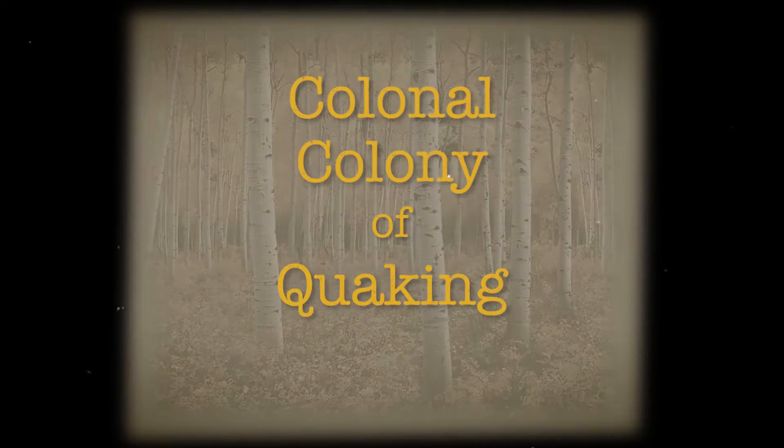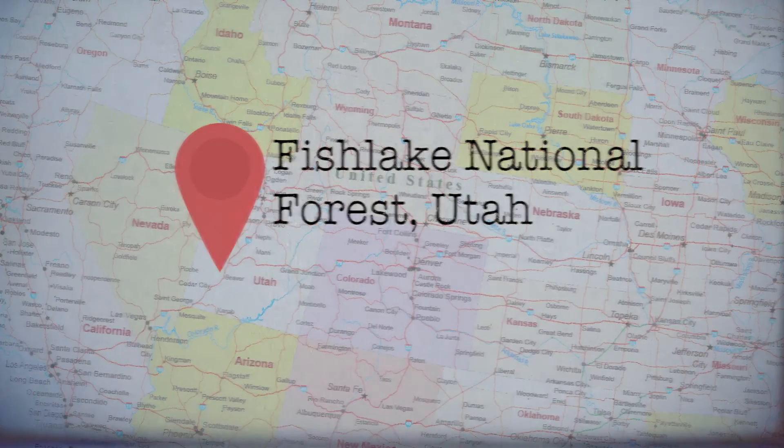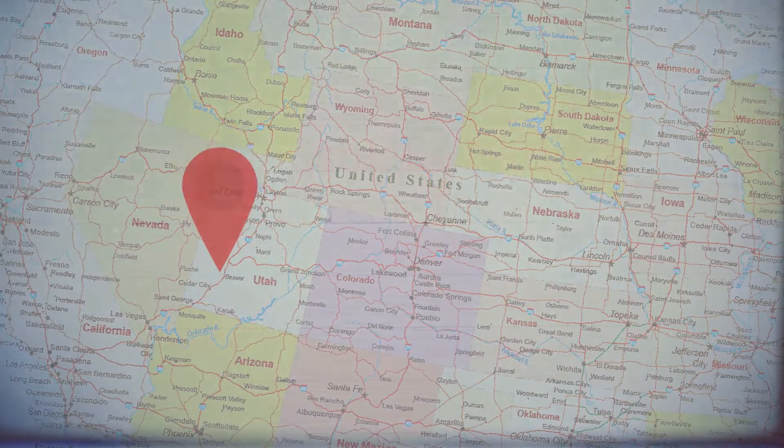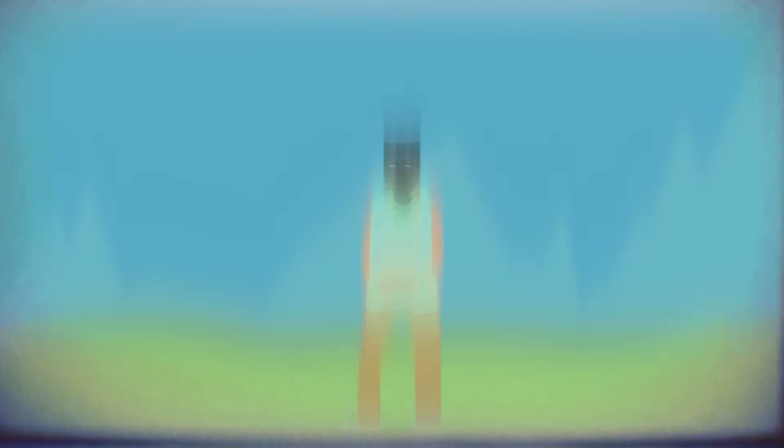Which is the name of a clonal colony of quaking aspens in Utah's Fish Lake National Forest, which has been roughly estimated to be around 80,000 years old. Fuck me. That's a long time to just stand around. But imagine if those trees could talk. They have seen some shit.